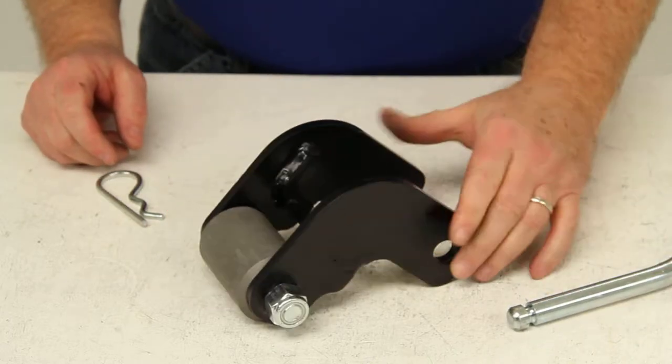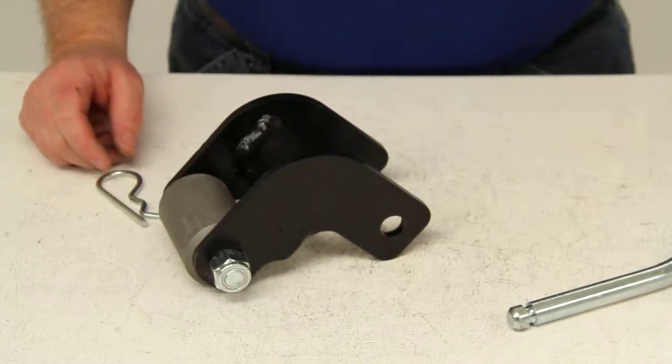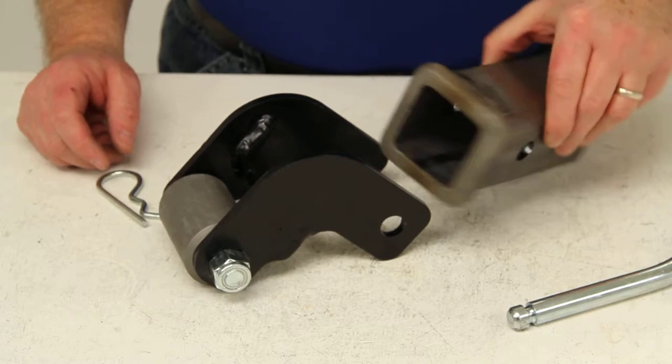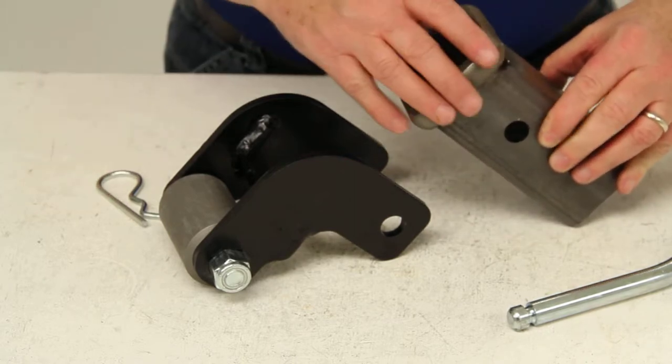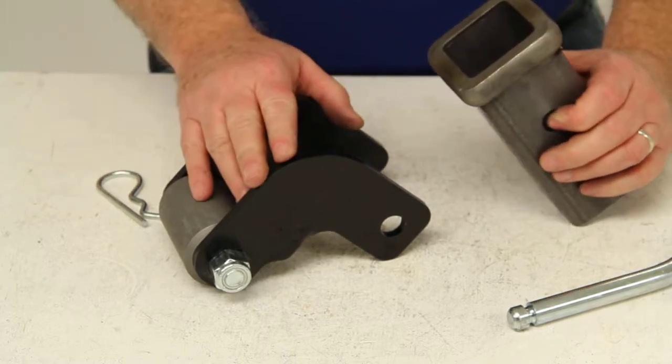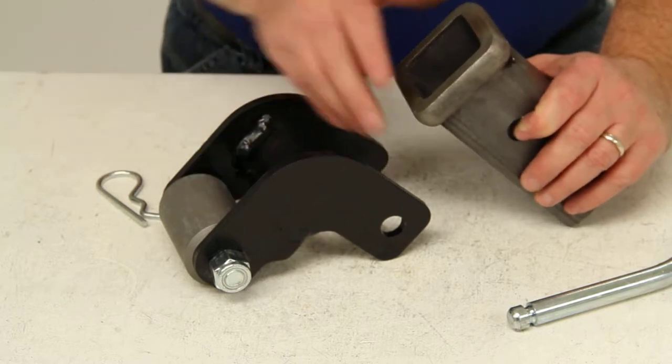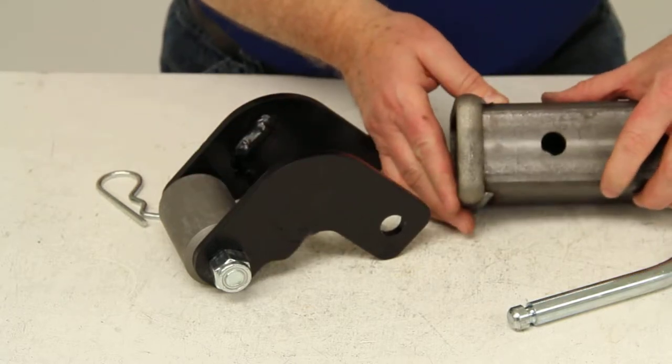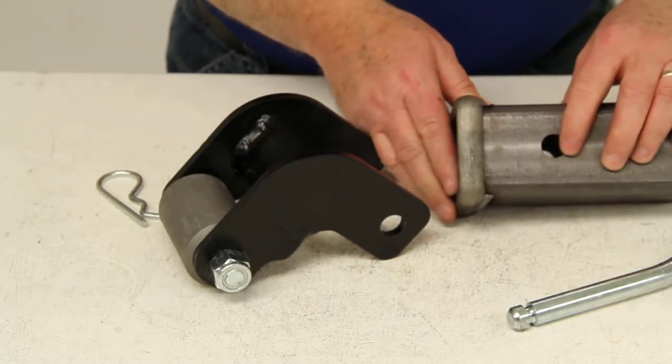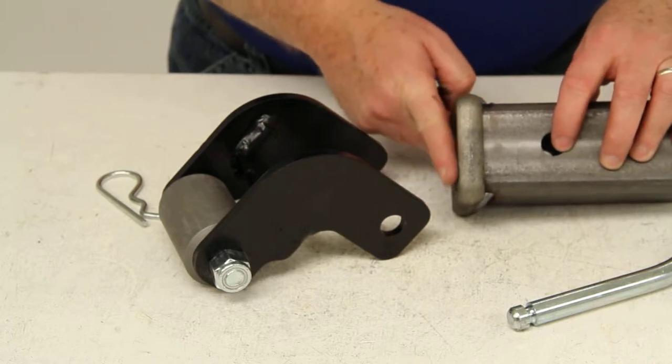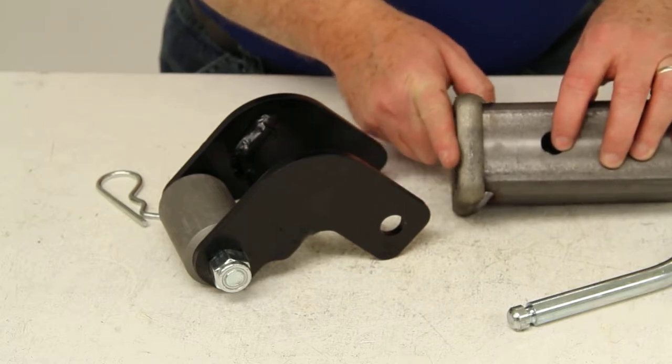Now I want to give you an example of how this would insert into a trailer hitch. I have an example here. This is a 2 inch hitch receiver. Now this roll-away part is designed for a hitch receiver that has a distance of 2 and 7 sixteenths between the center of the hitch pin hole and the end or the face of your hitch receiver.